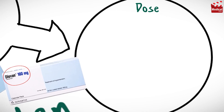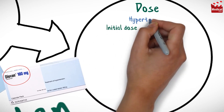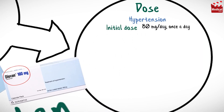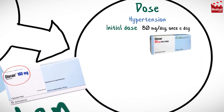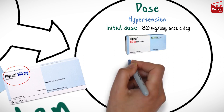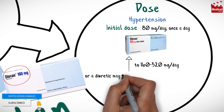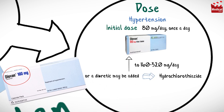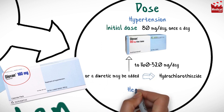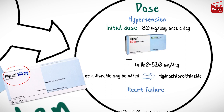The usual initial dose of Valsartan for hypertension for adults is 80mg per day, once a day. That may be increased to 160-320mg per day, or a diuretic may be added, such as hydrochlorothiazide. For heart failure, the usual dose is 40-160mg twice a day.